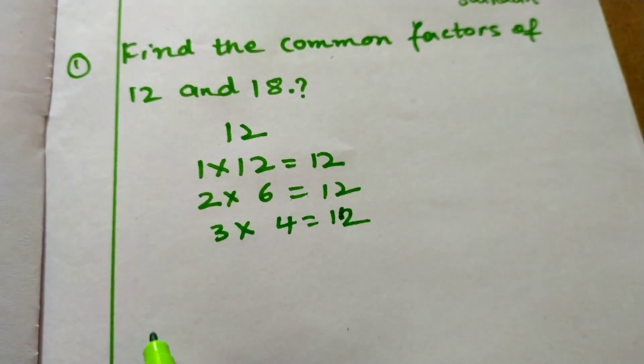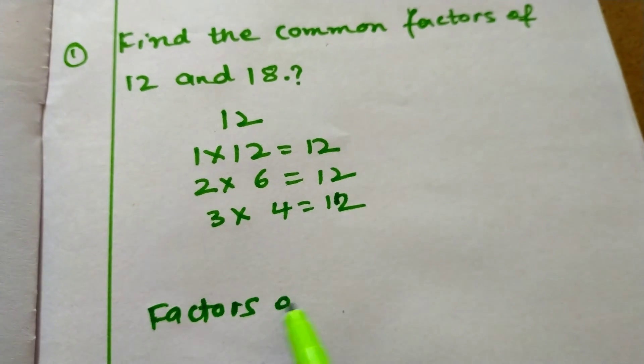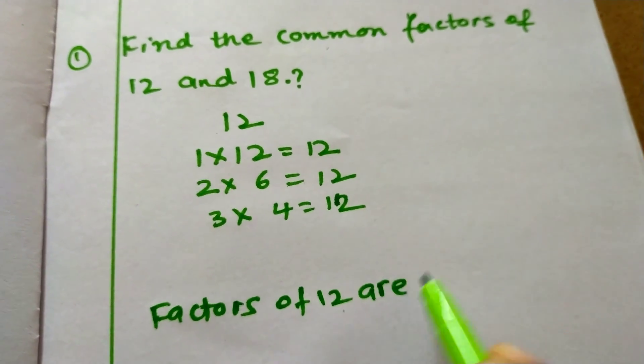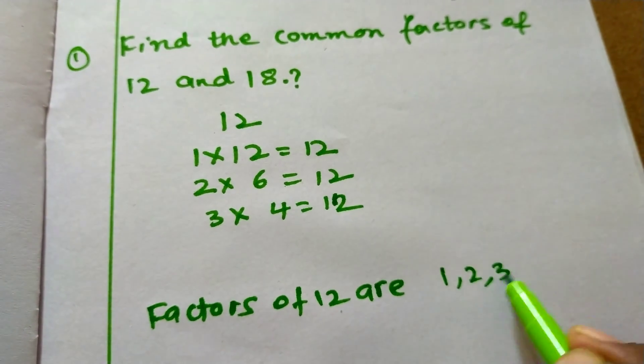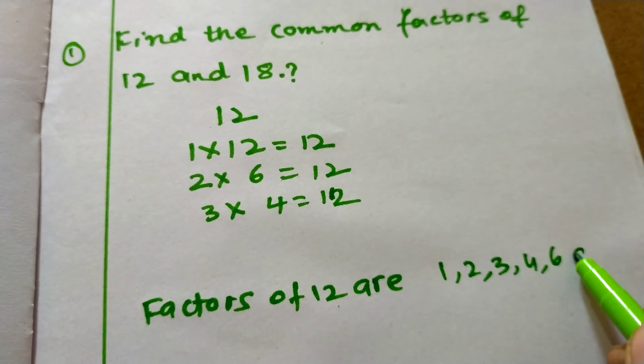So the factors of 12 are 1, 2, 3, 4, 6, and 12.